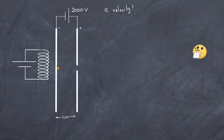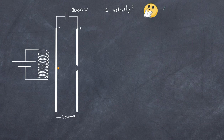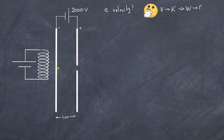The thinking process: I need the velocity, which I can get from kinetic energy. Kinetic energy relates to work done, and work requires knowing the force and the distance. Now I know the steps needed to work this out — and I'll do it the long way first, because you can also do it the short way.